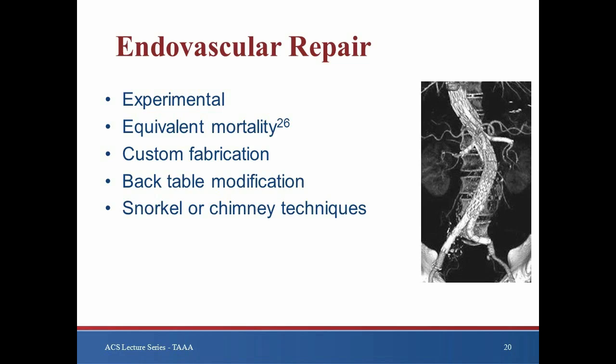Total endovascular repair of TAAAs is still in the experimental phase worldwide, and to date there are no commercially available fenestrated or branched endografts available in the United States. Initially, enthusiasm for total endovascular repair was lacking due to the fear of spinal cord ischemia resulting from the exclusion of intercostal and lumbar arteries, but these fears have waned with the progression of successful endovascular treatment of juxtarenal AAAs. As with all endovascular therapies, European and Australian studies predated those in the United States. The first American series of Cook's branched endografts was published in 2007 and reported a 93% technical success rate and a 6% mortality rate. These grafts are custom made specifically for each patient's aortic anatomy, however, requiring more than a month for fabrication.